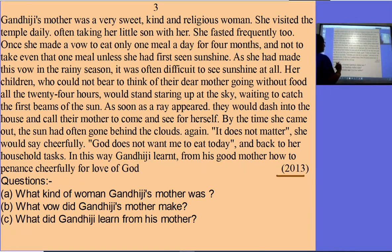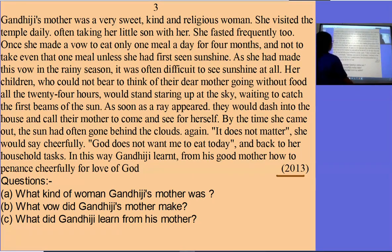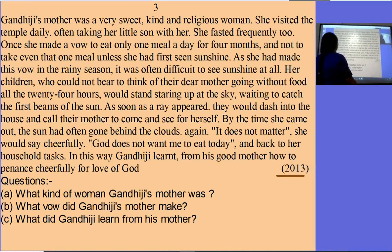This is the passage which we have read. Now we will see the questions. Question A: What kind of woman was Gandhi Ji's mother? Children, see here — in the first line you will find the answer. Question B: What vow did Gandhi Ji's mother make? The answer is she vowed to eat only one meal a day for four months and not to take even that meal unless she had first seen sunshine. Question C: What did Gandhi Ji learn from his mother? The answer is: from his good mother, how to fast cheerfully for the love of God.